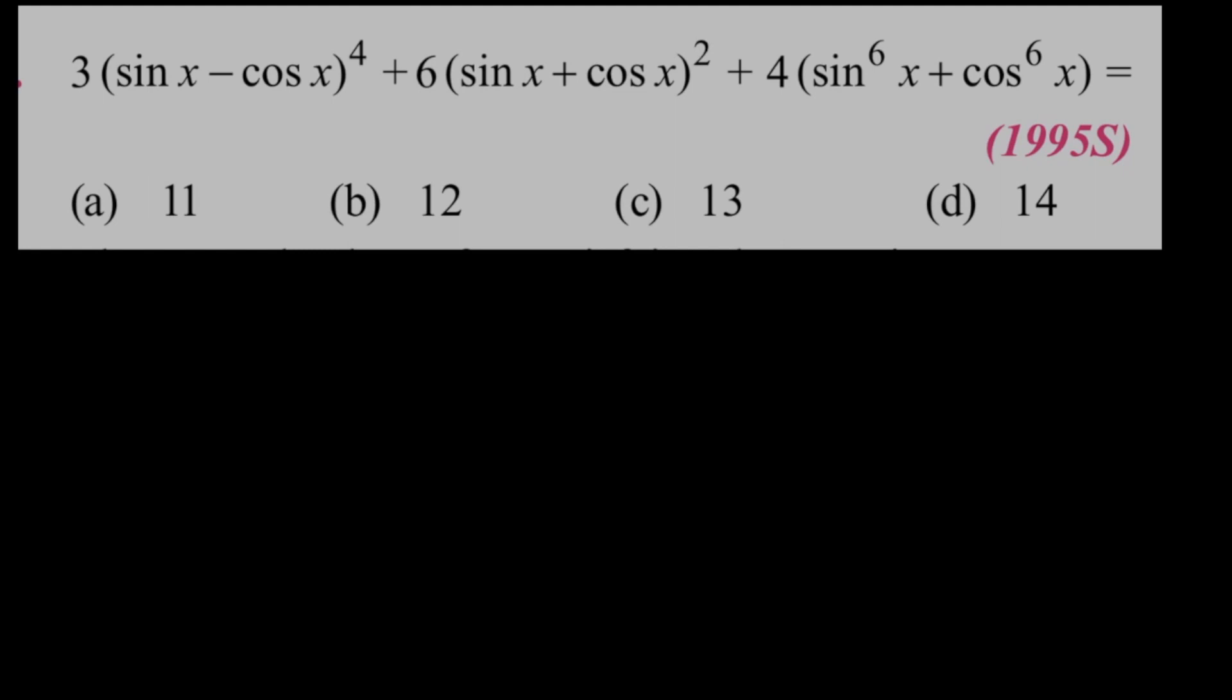The first question is 3 times sin x minus cos x whole power 4 plus 6 times sin x plus cos x whole square plus 4 times sin power 6 x plus cos power 6 x is equal to.